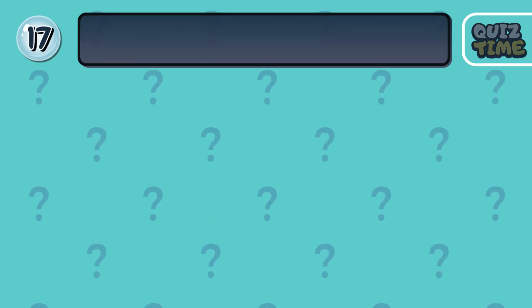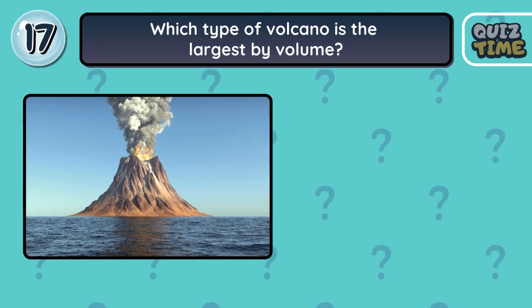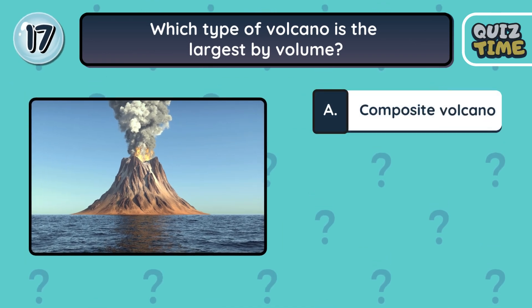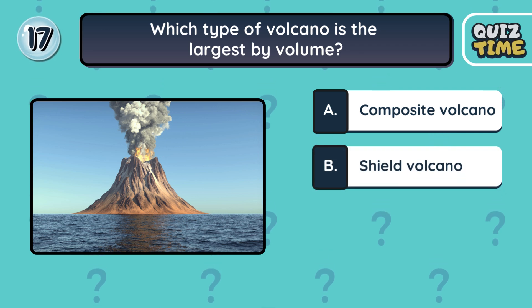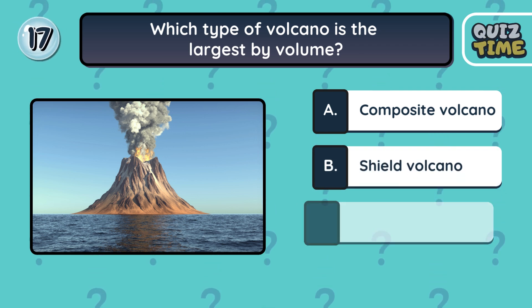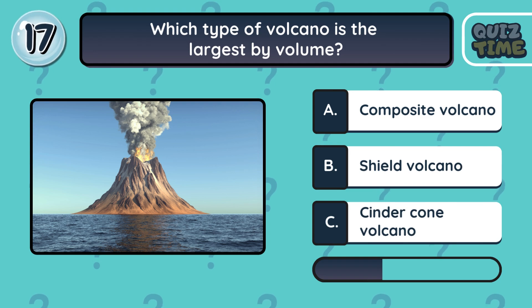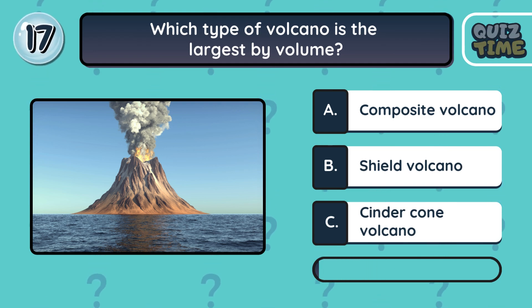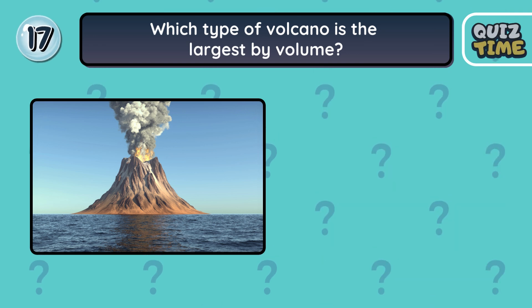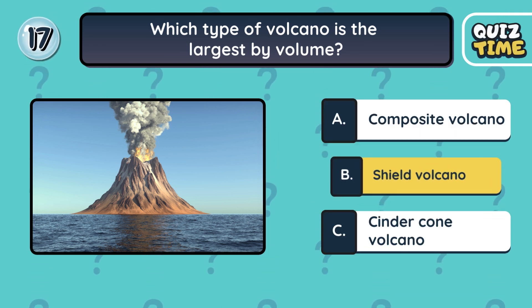Number 17. Which type of volcano is the largest by volume? A. Composite volcano. B. Shield volcano. C. Cinder cone volcano. The correct answer is B. Shield volcano.